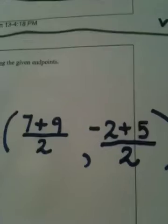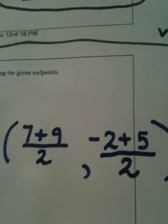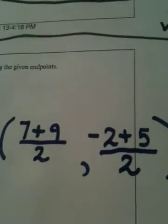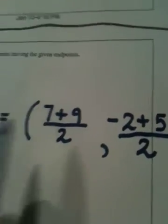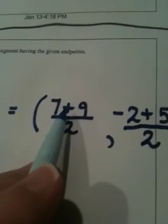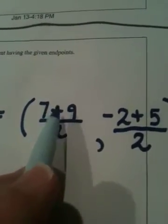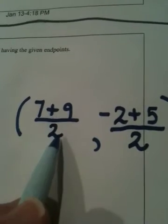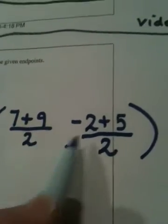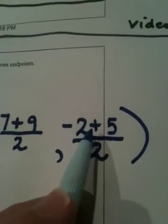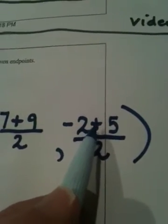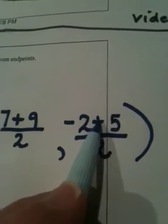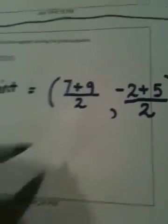So remember, finding the midpoint is pretty simple once you have the endpoints. You average the x values, which means you add and divide by two, and you average the y values, which means you add and divide by two.